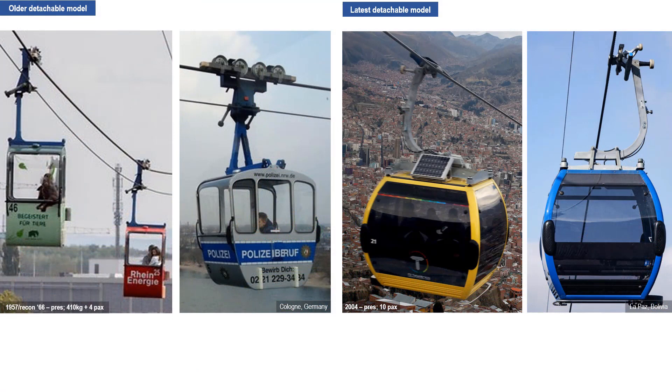An example of an older model ART is this touristic ART in Cologne, Germany. It was built in 1957 and reconditioned in 1966. It is still being used today. It has a detachable grip that is big and bulky. This attaches to a haul cable. The ART has a separate carriage wheel gliding over a support track cable to move the cabin forward.